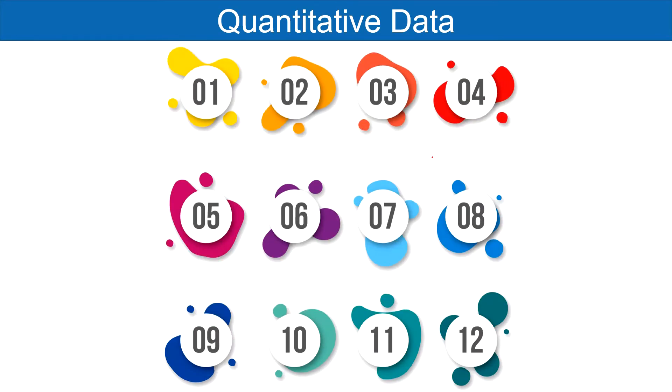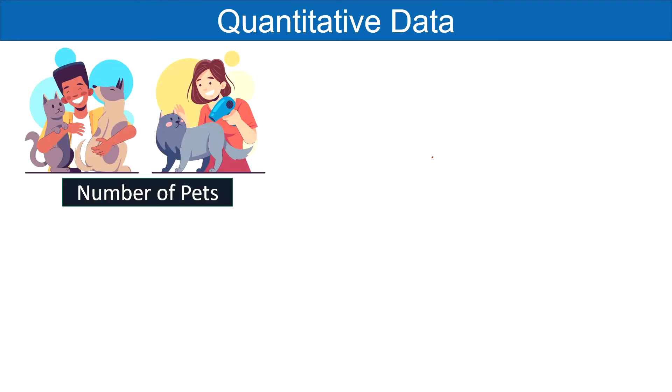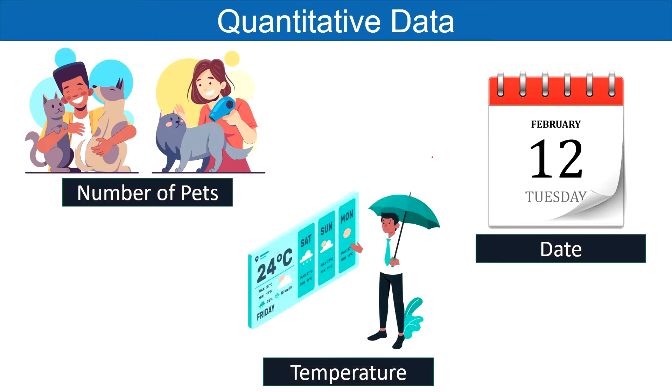Because this data is in numerical form, it can be used in computations and statistical tests. It can be easily presented in tables, charts, graphs, etc. For example, number of pets, date, temperature, etc.